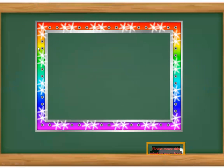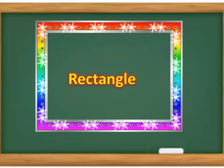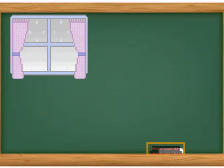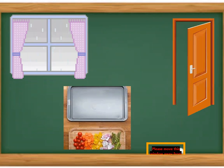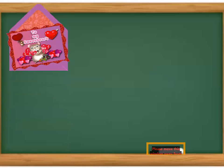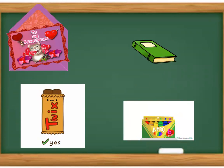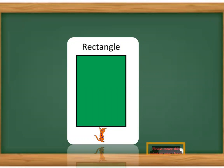What shape are we learning this week? Very good, it's rectangle! Rectangle starts with the letter R — R, R, rectangle. This window is a rectangle. Let's see some other shapes around us: that tray is a rectangle, the door is a rectangle, the envelope is a rectangle, chocolate bar, book, and crayon box are all rectangles. The rectangle has two long sides and two short sides.